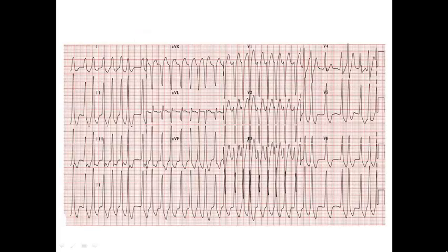Let's look at this ECG. We can see here that we have irregular wide complex tachycardia. We can notice that some of the RR intervals are extremely short — some are just one large square — so the heart rate here may approach 300 bpm. This is a very malignant rate, and this ECG is very suggestive of pre-excited AF.